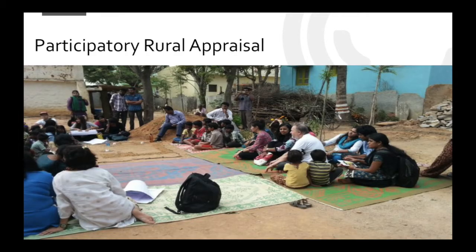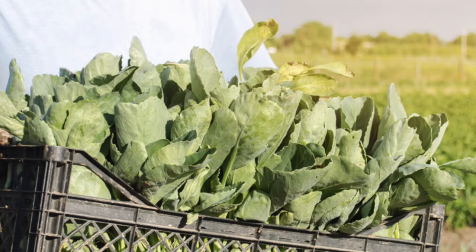PRA has many tools, such as community mapping, where you basically map all the assets in a community. Maybe it's the farm, but maybe there's also the market, the farmers' market — you mark where the different farms are. You could also identify roads as assets. Basically you make a community map with the people in the village and you can see what are the different resources that are available.